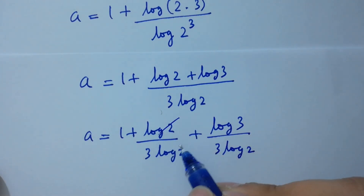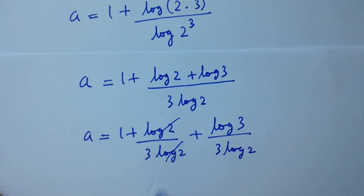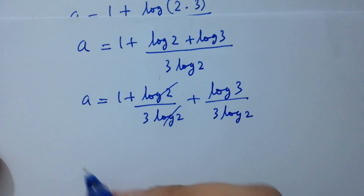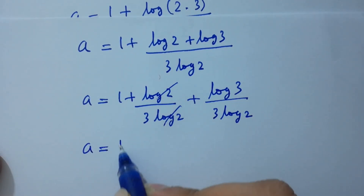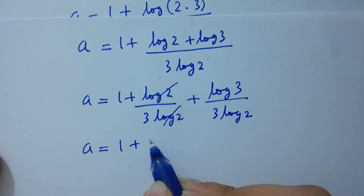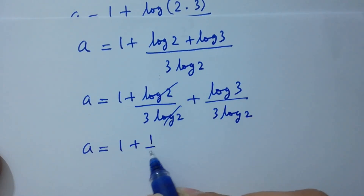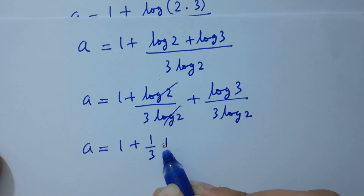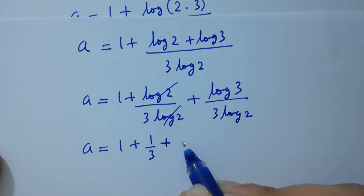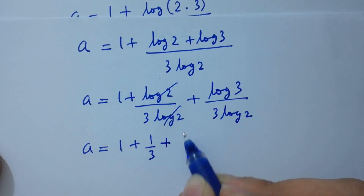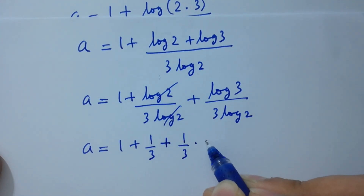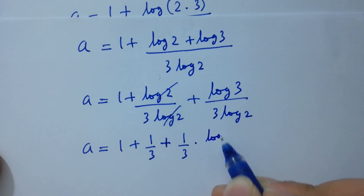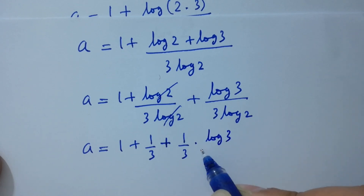Log 2 and log 2 cancel. A equals 1 plus 1 over 3 plus 1 over 3 times log 3 over log 2.